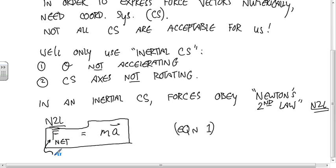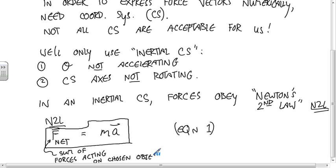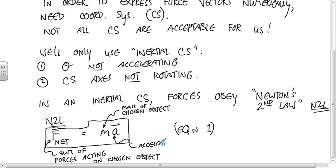F-net here is the sum of forces acting on the chosen object. M is the mass of the chosen object.